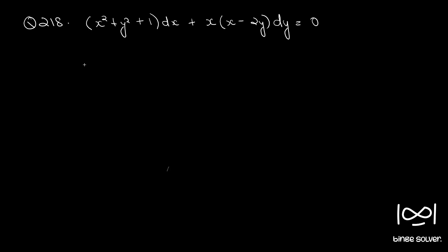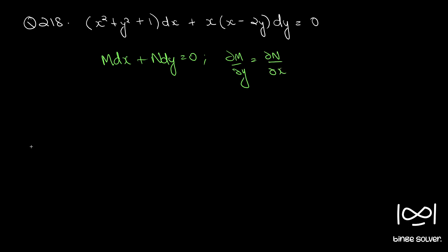The given differential equation is in the form M dx + N dy = 0. First we check whether it is exact using the necessary and sufficient condition ∂M/∂y = ∂N/∂x. Here M = x² + y² + 1 and N = x² − 2xy.